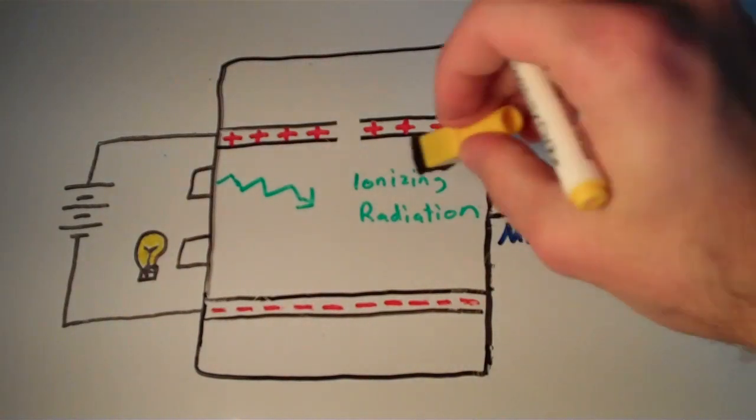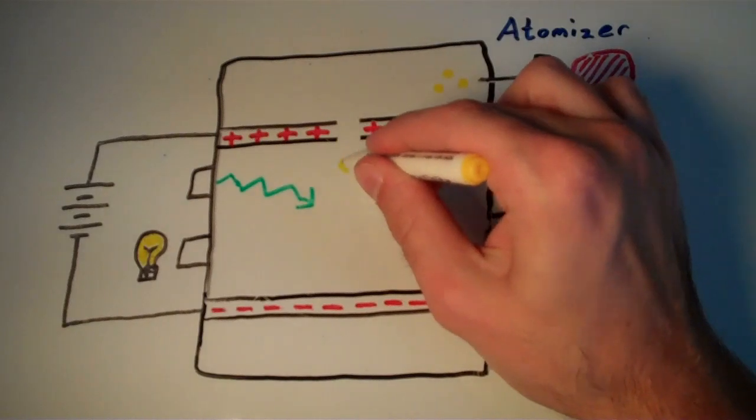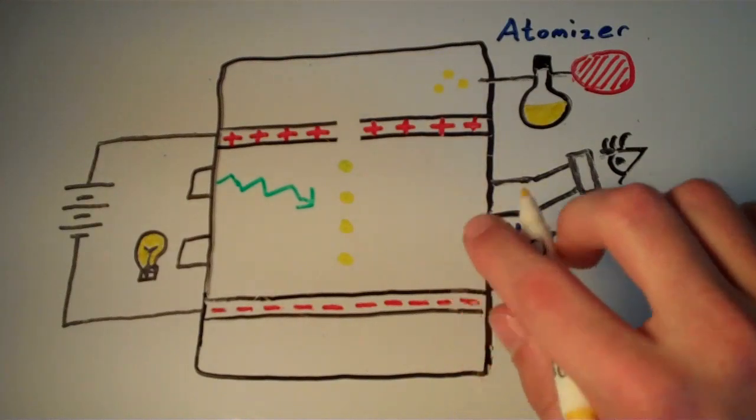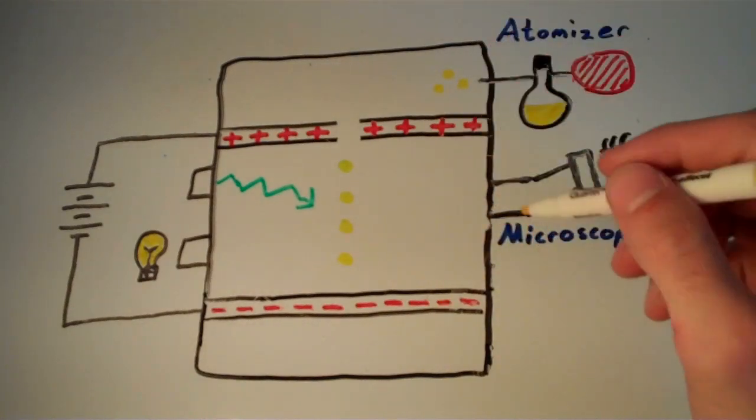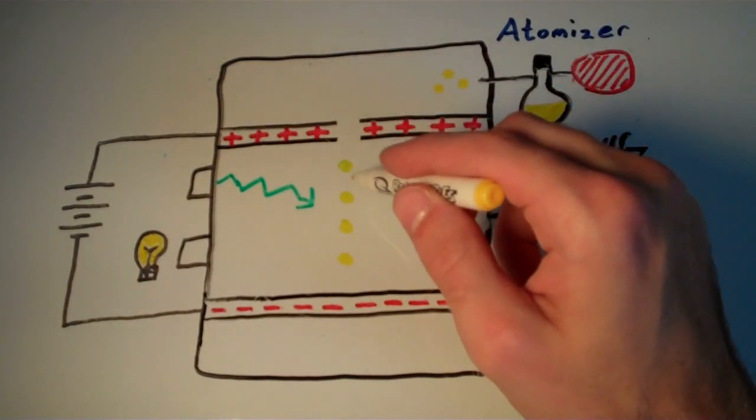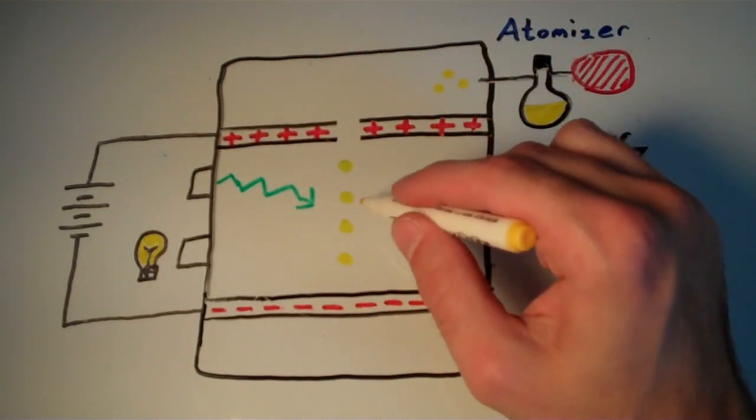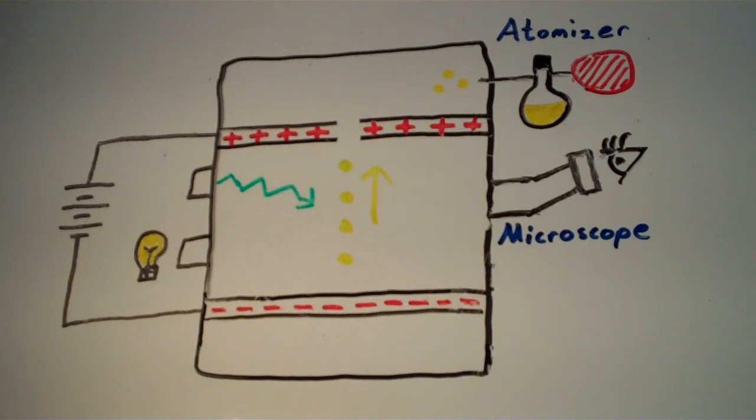So ultimately what happens is you have a free fall of these oil droplets. The oil droplets fall down and once you turn on the power source that's connected to these positively and negatively charged plates, depending on the voltage that you use in the power source you can actually stop the direction, you can stop the free fall of the oil droplets. So the oil droplets are falling against gravity, but up to a certain point, if you apply the right amount of voltage, you can stop it. And if you apply more voltage than that, then you can actually send them upward too, towards the positively charged plate.